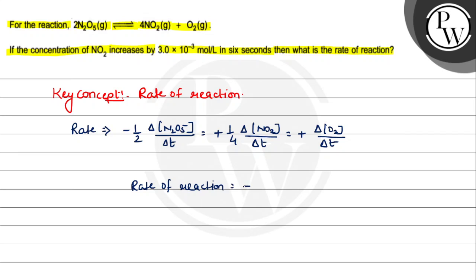So this question asks for 1/4 Δ[NO2]/Δt, which is 1/4 × 3×10^-3 mol/L divided by 6 seconds.